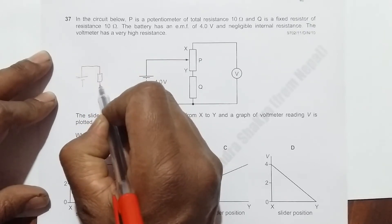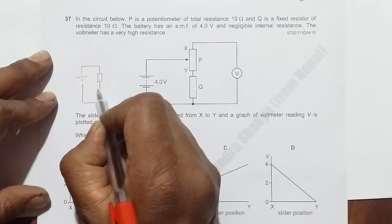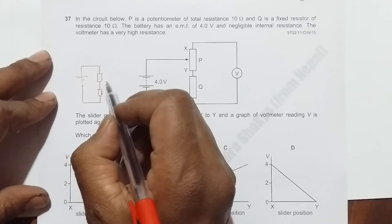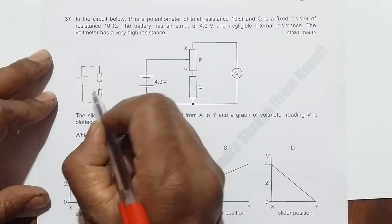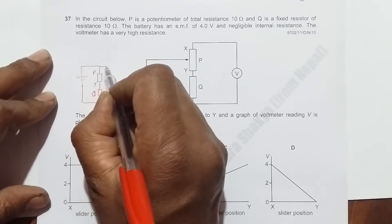I can break the potentiometer into two parts. One part is PY and another part is PX. Here, this is resistance Q, this is portion Y, and this is portion P. Then from here starts another part - this is P and this is X.